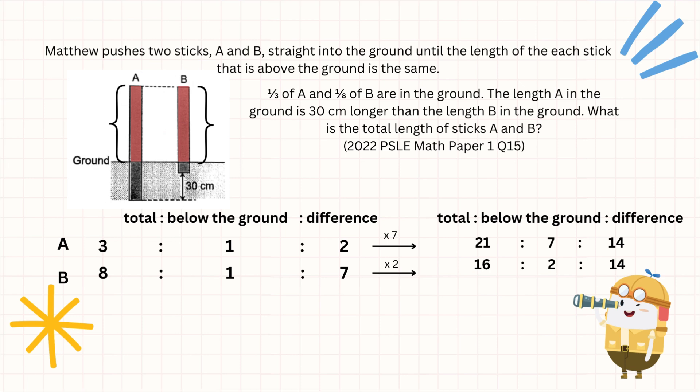We can see that the sizes of the parts above the ground are equal, and hence the difference between A and B would be the most important factor. 21 minus 16 equals 5U, and the reason being there is a 30 cm difference. So 5 units equals 30 centimeters, where 1 unit equals 6 centimeters.